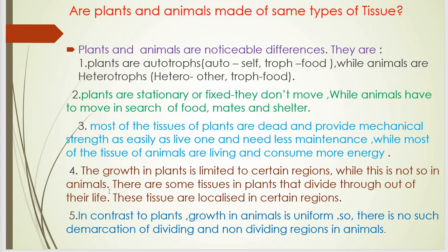The growth in plants is limited to certain regions, while this is not so in animals. In plants, some tissues divide throughout their life and are localized in certain regions. In contrast, growth in animals is uniform, and there is no such demarcation of dividing and non-dividing regions in animals. So we can say that plants and animals are made of different types of tissues.